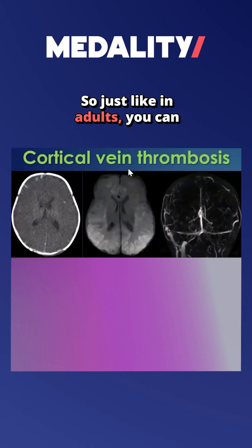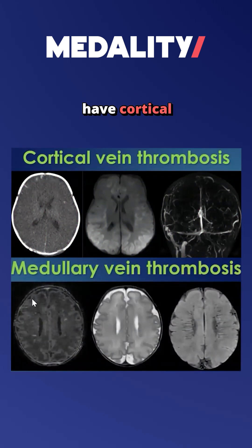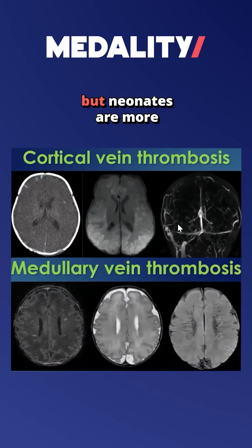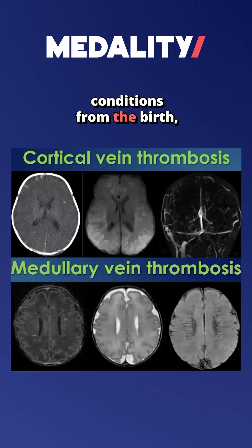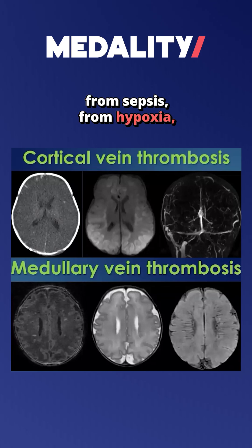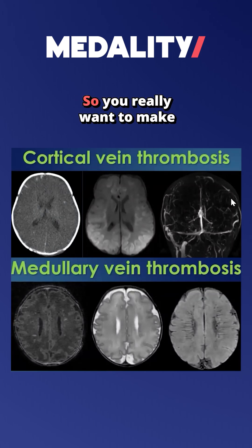Vascular lesions. So just like in adults, you can have cortical and medullary vein thrombosis, but neonates are more predisposed to prothrombotic conditions from birth, from sepsis, from hypoxia, ischemia, all of these things.